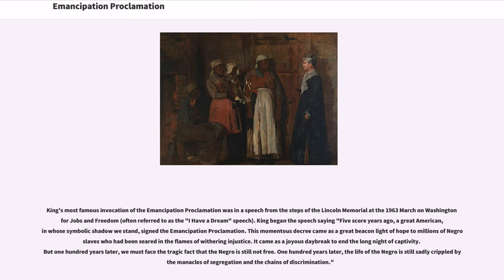King began the speech saying: 'Five score years ago, a great American, in whose symbolic shadow we stand, signed the Emancipation Proclamation. This momentous decree came as a great beacon light of hope to millions of Negro slaves who had been seared in the flames of withering injustice. It came as a joyous daybreak to end the long night of captivity. But one hundred years later, we must face the tragic fact that the Negro is still not free. One hundred years later, the life of the Negro is still sadly crippled by the manacles of segregation and the chains of discrimination.'